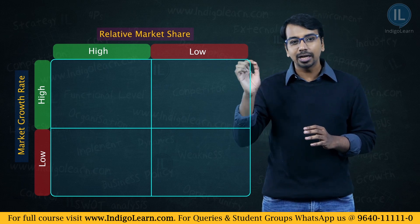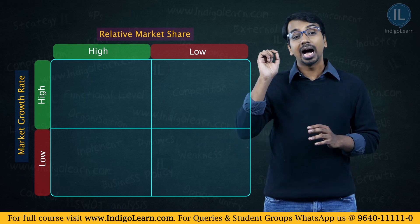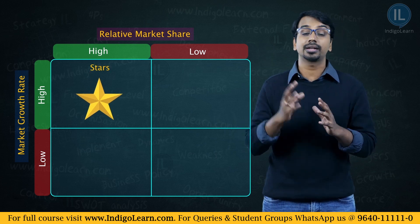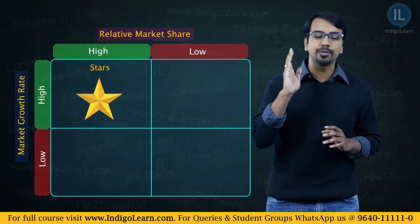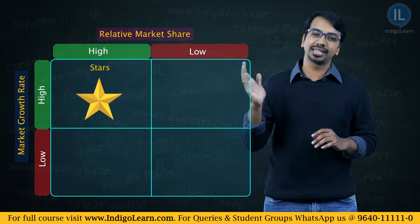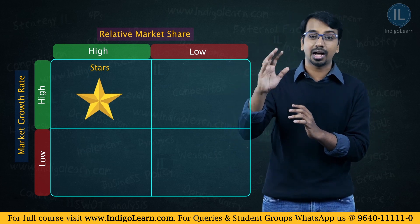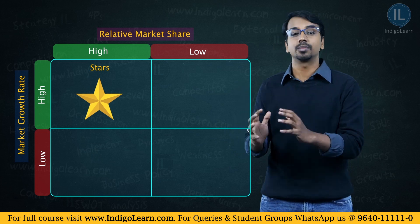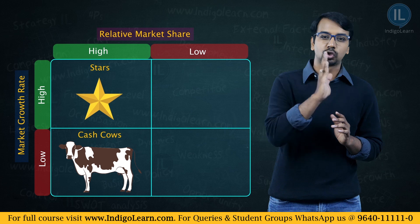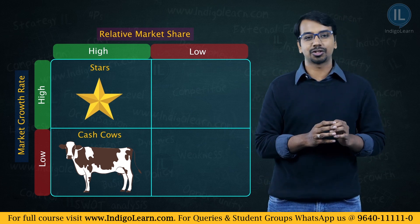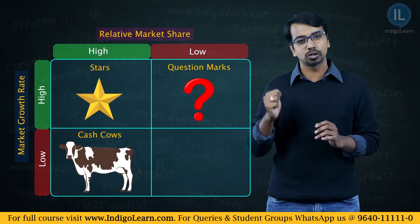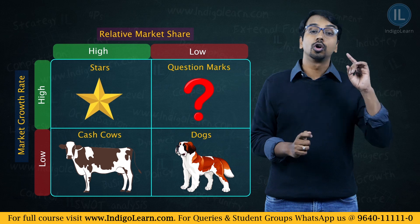If a product is in a high growth rate market and also has a relatively higher market share, this category is called the star category. A high growth rate and a relatively high market share makes it a star category product. If it is a low growth rate but the market share is still relatively high, this becomes a cash cow. If the market exhibits a relatively higher growth rate but the product's market share is low, we call it a question mark or a problem child. And the last category where both the market share and the growth rate are low is called a dog category.